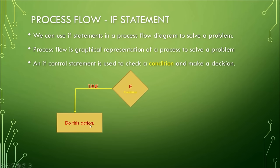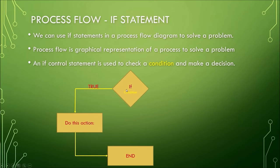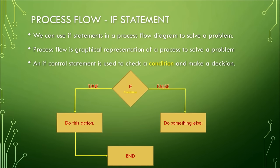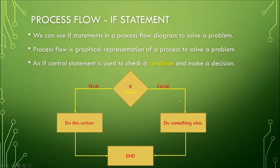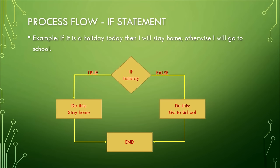If we check our condition and the condition is true, we do some actions and then finish the program. If the condition is false, we do something else and then finish the program. The condition will always evaluate to either true or false, and based on the result you do the action for true or the action for false.